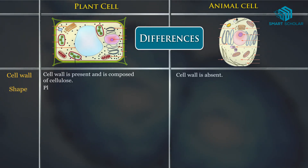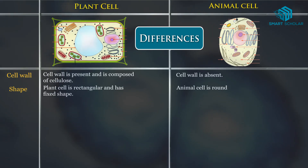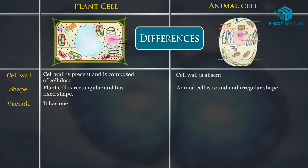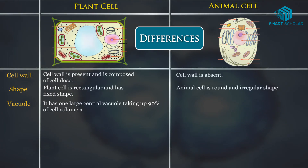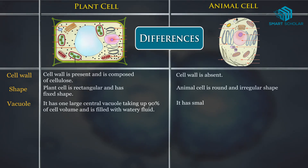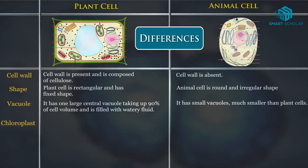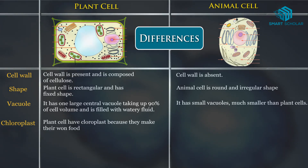The shape of a plant cell is rectangular and has a fixed shape, whereas an animal cell is round and irregular in shape. Regarding vacuoles, plant cells have one large central vacuole taking up 90% of cell volume and is filled with watery fluid, whereas animal cells have small vacuoles, much smaller than plant cells.